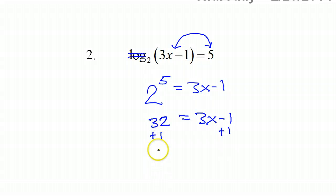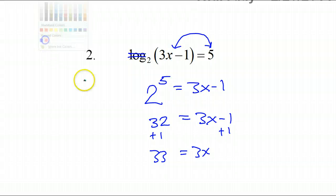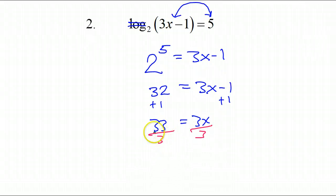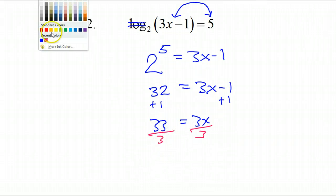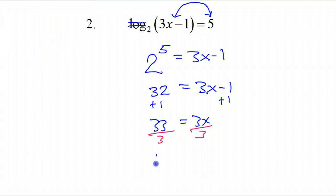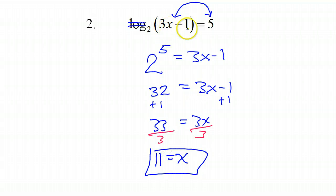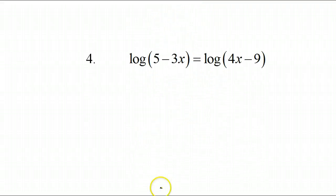I would add 1 to both sides, so that's going to give me 33 is equal to 3x. Divide both sides by 3 to get x by itself, and that's going to give me x equals 11. Check: 3 times 11 is 33, minus 1 is 32 — it's not negative, it's cool.